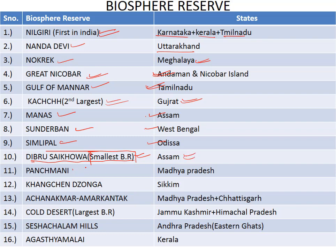Next is Debrugarh Ekowa Biosphere Reserve in Assam — it is the smallest biosphere reserve in India. Then Pachmarhi Biosphere Reserve in Madhya Pradesh, Kangchenjunga Biosphere Reserve in Sikkim, and Achanakmar-Amarkantak Biosphere Reserve spanning Madhya Pradesh and Chhattisgarh. The Cold Desert Biosphere Reserve covers Jammu and Kashmir and Himachal Pradesh — it is the largest biosphere reserve in India.